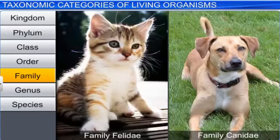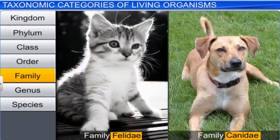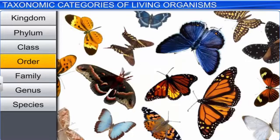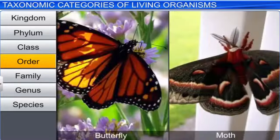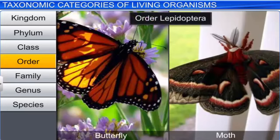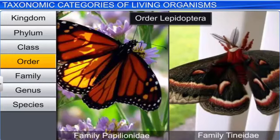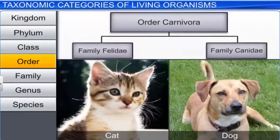Although a cat and a dog exhibit some similarities and some differences, they are separated into two different families — Felidae and Canidae respectively. Order is the next category, which is a collection of related families. However, the number of similarities is less than that seen in a family. For example, the order Lepidoptera includes butterflies and moths, belonging to the families Papilionidae and Tineidae respectively. Similarly, families like Felidae and Canidae are included in the order Carnivora.